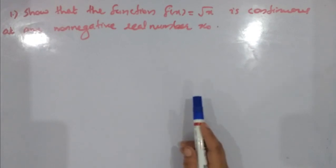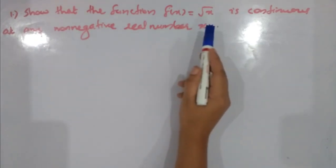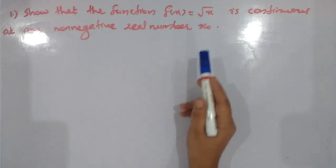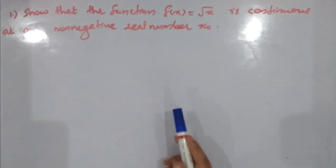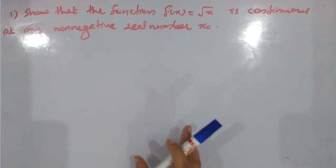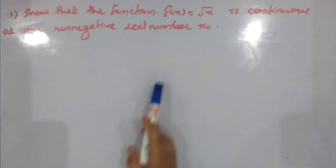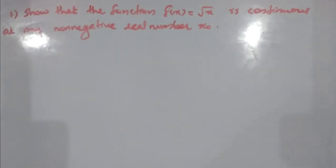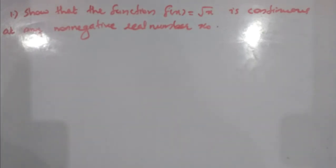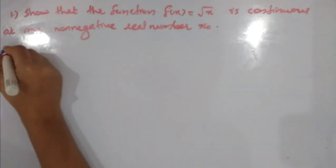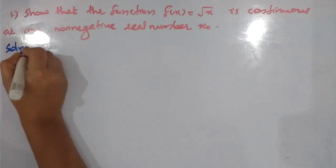Next, we will see the function. √x₀ is continuous. x₀ is greater than or equal to 0. Non-negative real number x₀ is continuous, and we will add the continuous value. This is the continuous value.